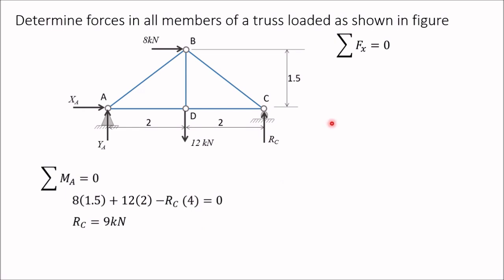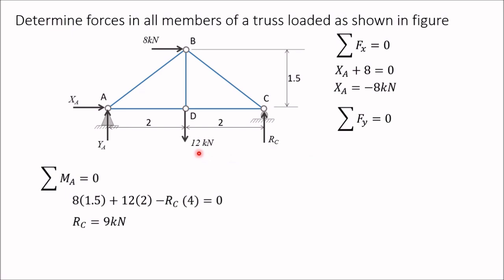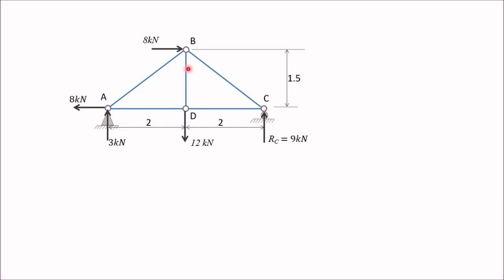Applying sigma FX equal to zero: there are only two forces in the X direction, XA and 8 kN, giving XA plus 8 equal to zero, therefore XA equals minus 8 kN. The negative sign indicates the assumed direction is opposite to the actual direction. Applying sigma FY equal to zero: YA plus RC minus 12 equals zero. Substituting RC equal to 9 kN gives YA equal to 3 kN.